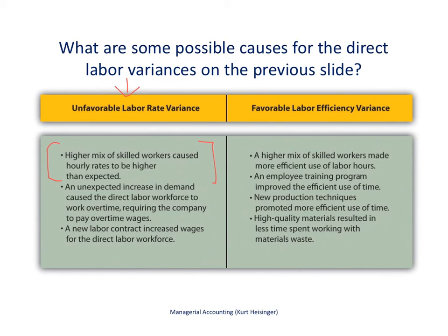There can be many possible reasons for the variance. For the favorable labor efficiency variance — our employees were efficient — the first possible cause is the same higher mix of skilled workers. It may have cost us more, as seen with the unfavorable labor rate variance, but they were more efficient in their use of labor hours, creating the favorable labor efficiency variance. We would normally talk to people in our organization to find out why, and then use that information for planning going forward to help our company be more efficient.